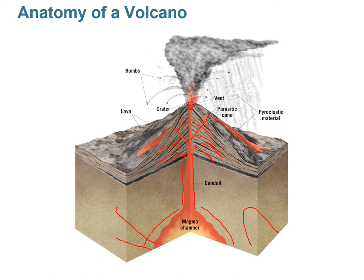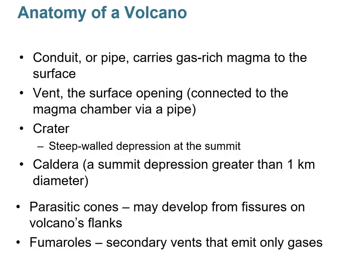The conduit is connected to the opening at the top called the vent, where eruptions occur. The rim surrounding the volcano is called the crater. If the crater exceeds a diameter greater than one kilometer, we call it a caldera. In volcanic landscapes you can often find fumaroles — vents or openings in the ground where gases are being emitted, sometimes with sulfur accumulation, boiling water, or water vapor shooting up.